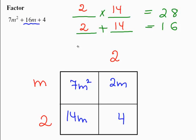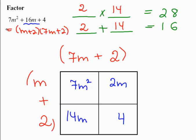If this is 14m, then this needs to be 7m. We're going to double check. m times 7m is 7m². That's it. I got my answer. So in factored form, the area of this rectangle is going to be (m + 2)(7m + 2).